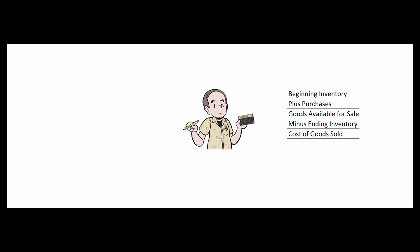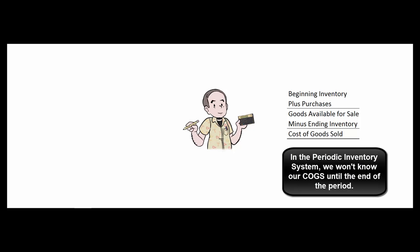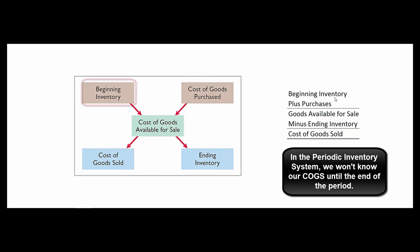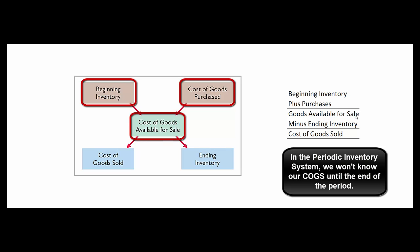Since we don't update our inventory when we use the periodic inventory system, we don't know what our cost of goods sold is until the end of the period. Then we take our beginning inventory plus the purchases during that period, and that gives us our total goods available for sale.